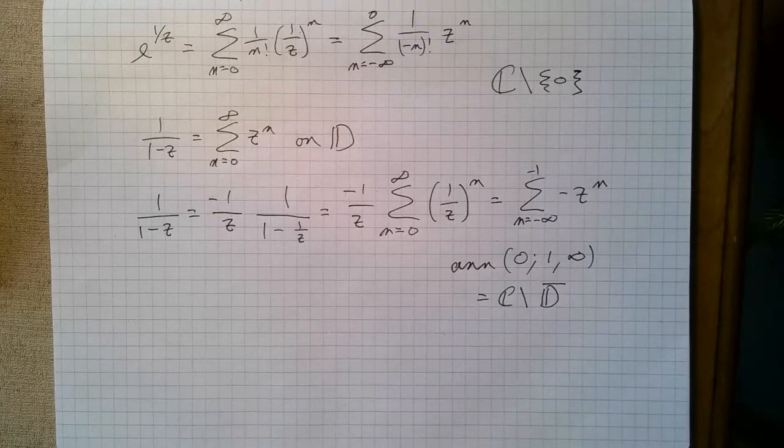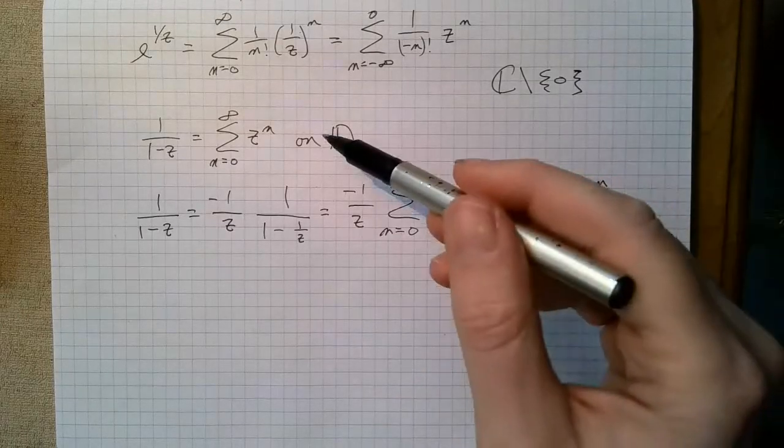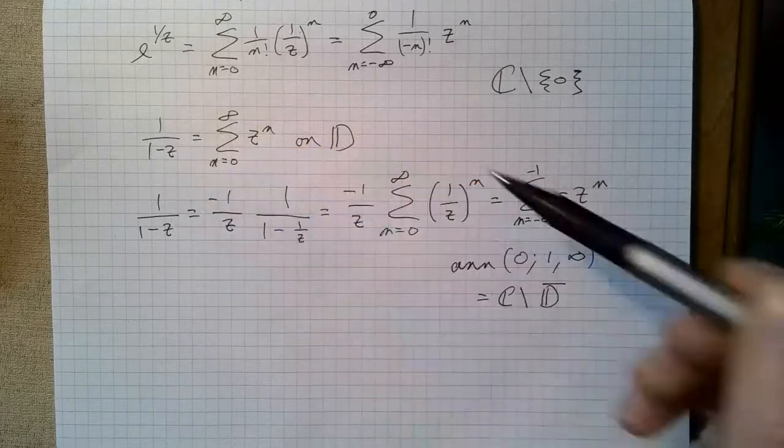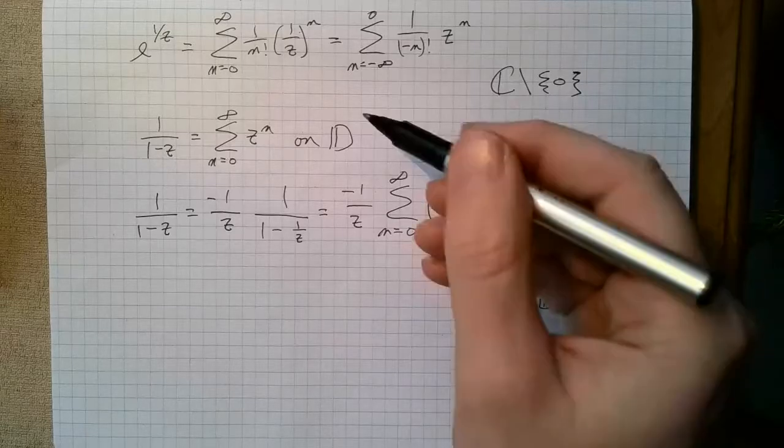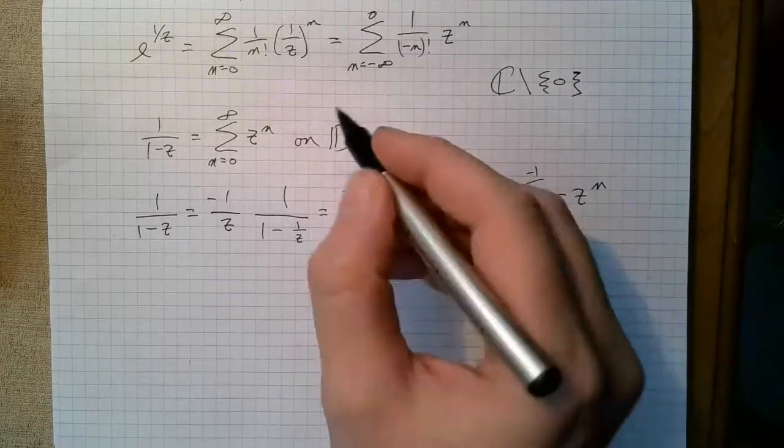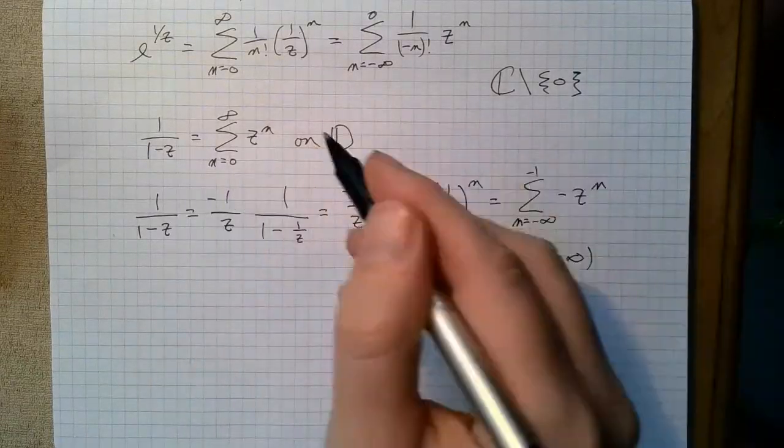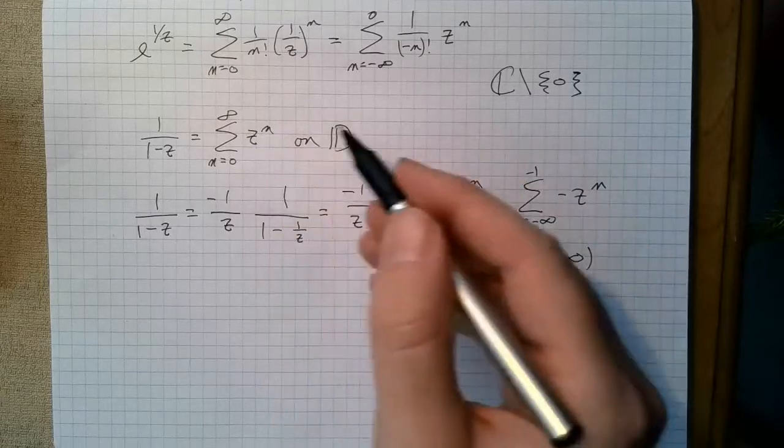So those are some examples. You can see that if I take the same function but on different annuli, or in this case, neither of these are annuli. I mean, it could be, the Laurent series could just be a power series, right?